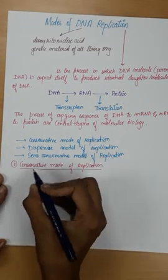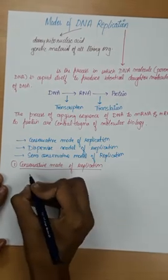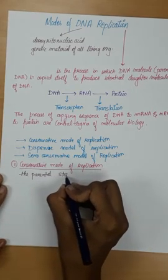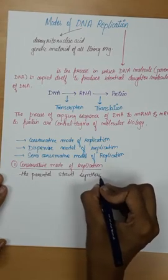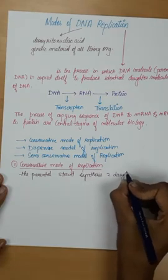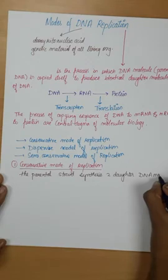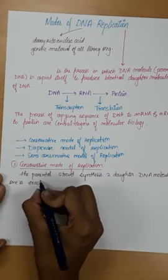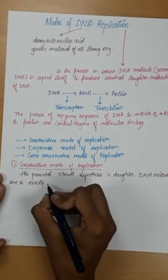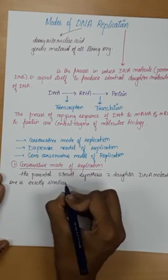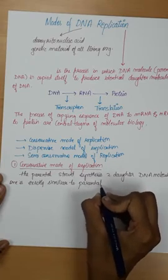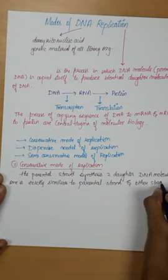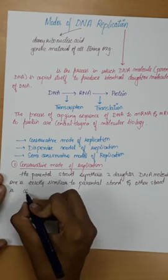In conservative mode of replication, the parental strand synthesizes two daughter DNA molecules. One is exactly similar to the parental strand, and the other is completely newly synthesized.